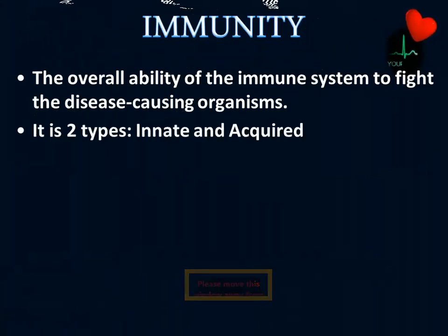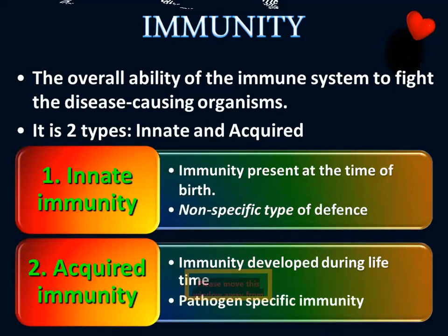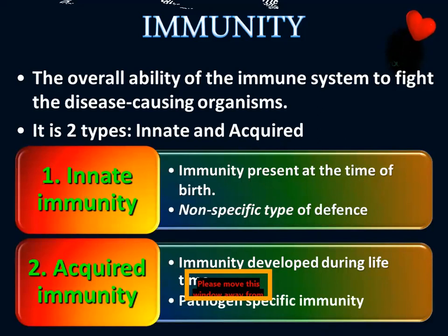The overall ability of the immune system to fight disease-causing organisms is immunity. Based on the type of fight, we can classify it as innate immunity and acquired immunity. Innate immunity is the immunity present by birth. Acquired immunity is the immunity developed during a lifetime. Innate immunity is a non-specific type of defense, while acquired immunity is a pathogen-specific immunity.